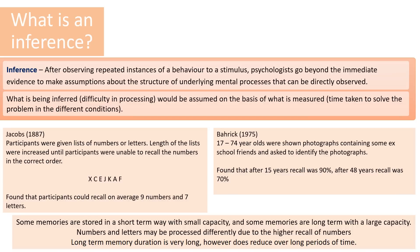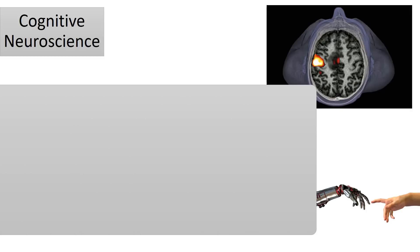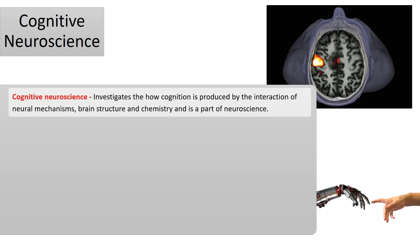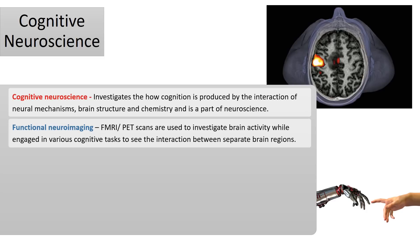Our final main idea from cognitive psychology is cognitive neuroscience — an investigation of how cognition or thought processes is produced by the interaction of a range of neural mechanisms, including aspects of brain structure and brain chemistry. The tool that's used is functional neuroimaging: functional MRIs or PET scans. These scanning techniques show brain activity as it happens, so as someone completes a task, scientists can see which areas of the brain light up, indicating those areas are responsible for processing that information.